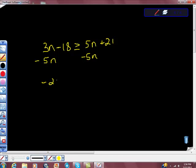So, we have negative 2n minus 18 is greater than or equal to 21. Right? So, we get negative 2n. I'm going to add 18 to both sides, is greater than or equal to 39, isn't it?